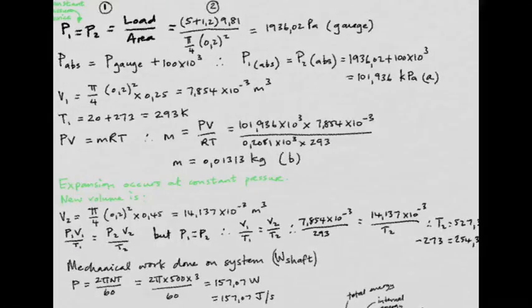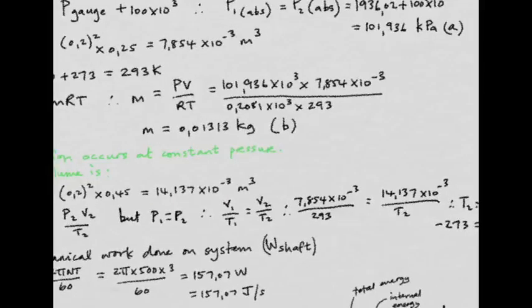Now consider the energy input. The shaft turning the impeller does mechanical work on the argon. Using P = 2πNT/60, where N = 500 rpm and T = 3 Nm, we get 157.07 watts, which is 157.07 joules per second entering the argon.